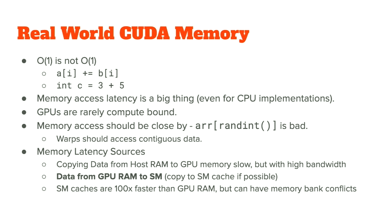Memory is by far the biggest issue when programming in CUDA. This is where the hard limits of what a GPU can and cannot do really come through. Very rarely is a GPU compute bound. It comes back to the situation where O(1) is not exactly O(1). The operation A[I] += B[I] has memory latency involved — both data points have to be received, and that's not instantaneous. We know this even in a CPU, but in a GPU it's much more explicit. You have to design around memory access quite a lot. Trying to access a random element in an array isn't super fast with CUDA because each thread accessing a different point means non-contiguous memory access.